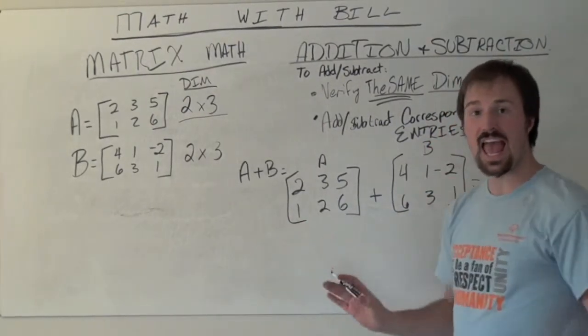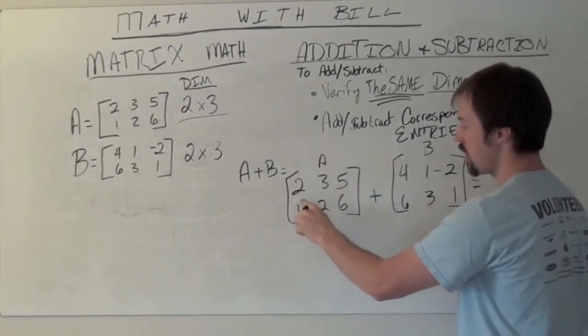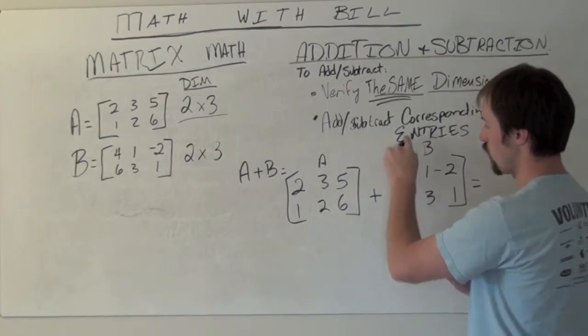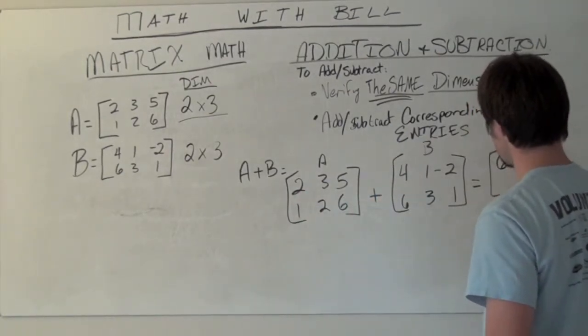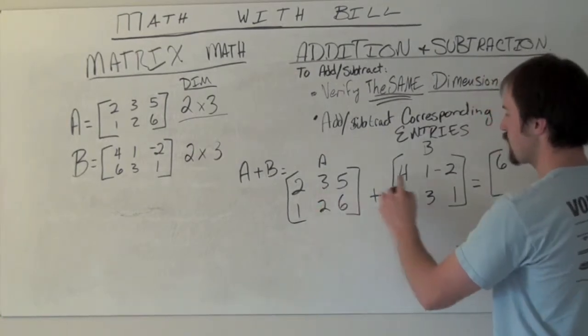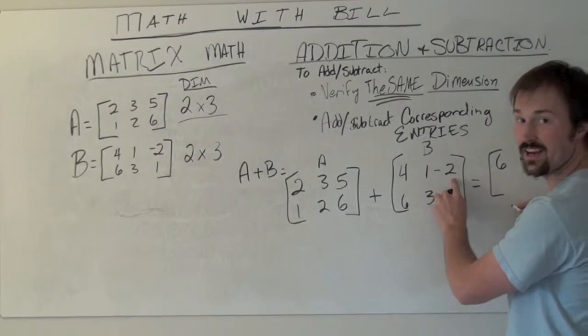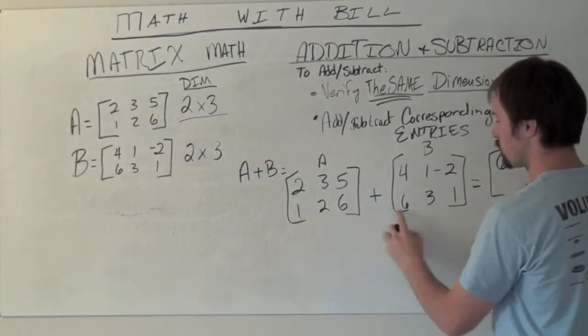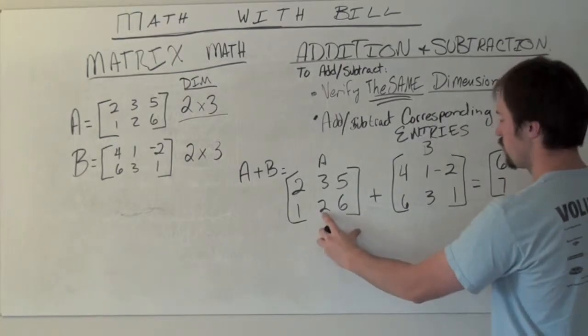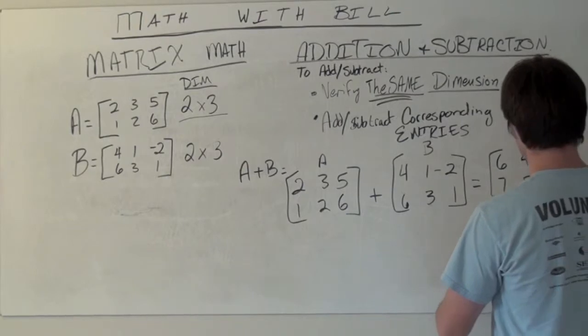Now we add the first entry row 1 column 1 with the first entry over here, row 1 column 1. So 2 plus 4 gives 6, 3 plus 1 gives 4, 5 plus negative 2 gives positive 3, 1 plus 6 gives 7, 2 plus 3 gives 5, and 6 plus 1 gives 7.